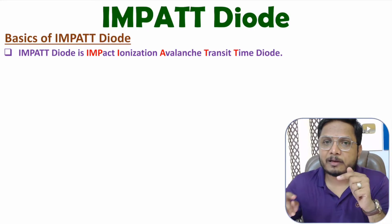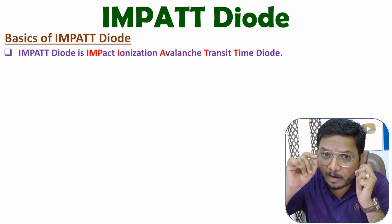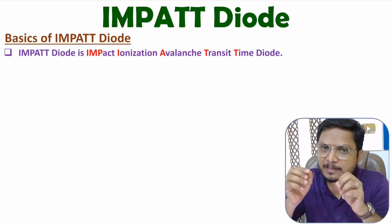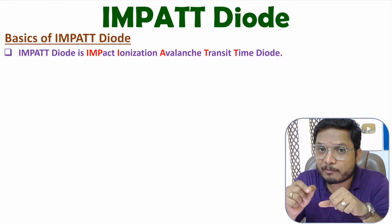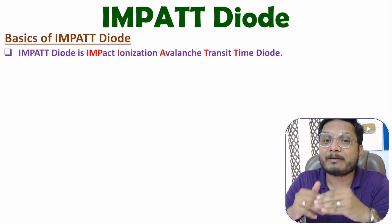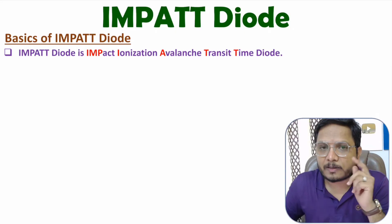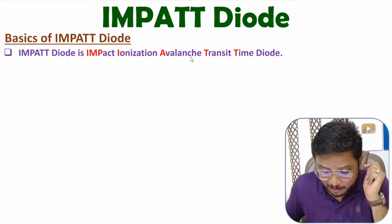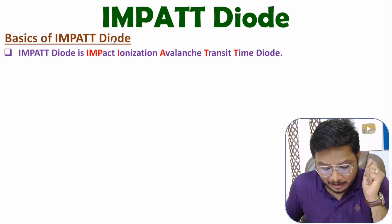One should know what avalanche effect is. When a diode is in reverse bias and breakdown happens, huge current flows because of charge carrier multiplication — that is the avalanche effect. IMPATT diode functions based on this avalanche effect and is used in reverse bias nearer to breakdown.